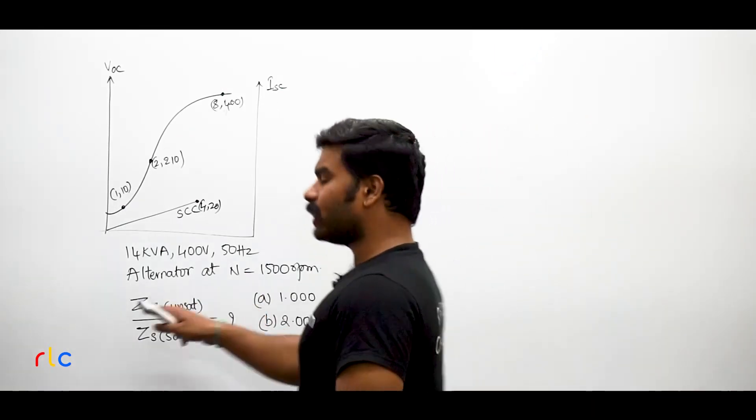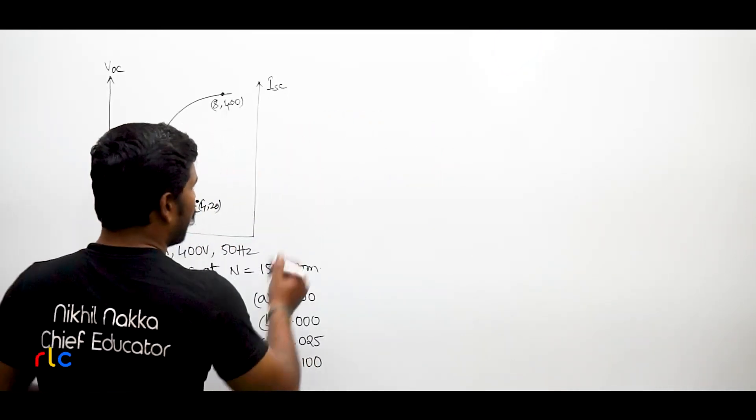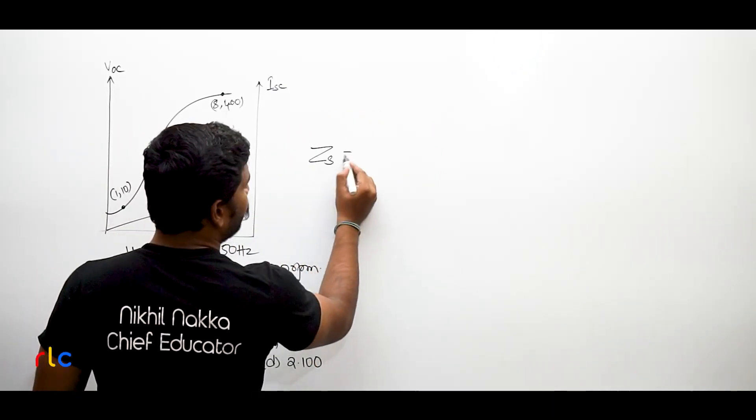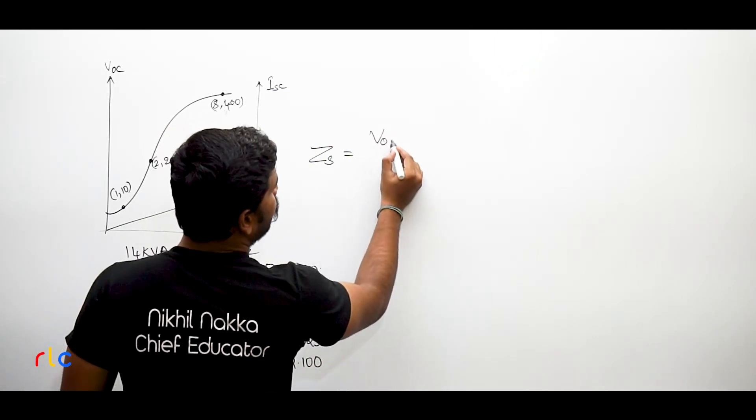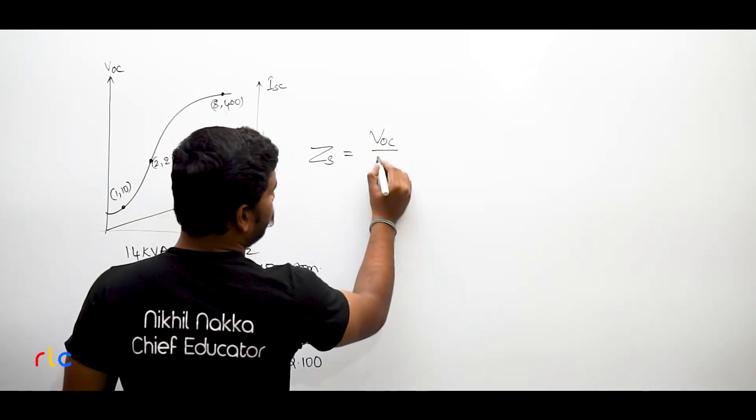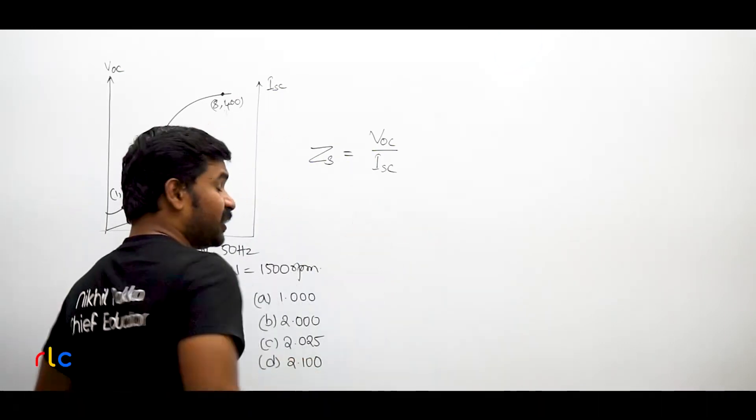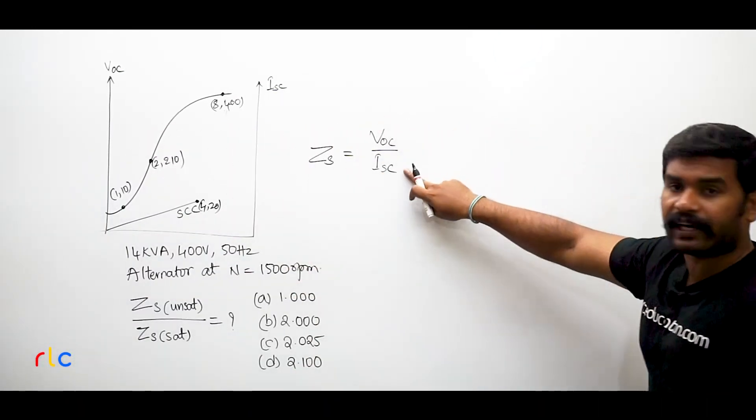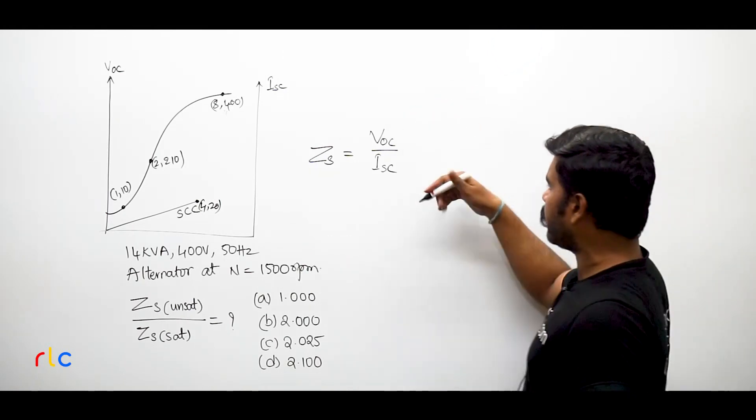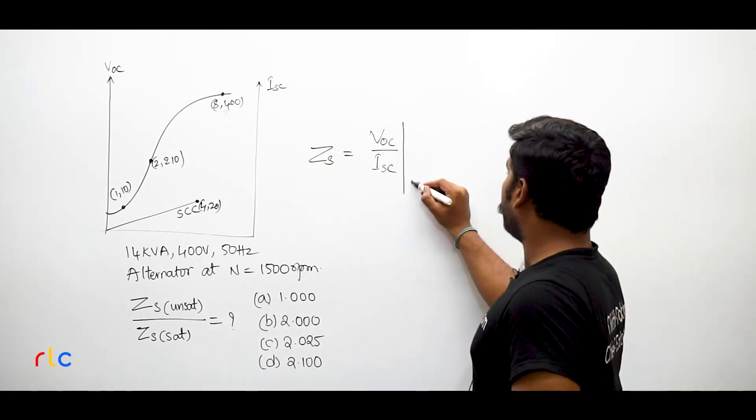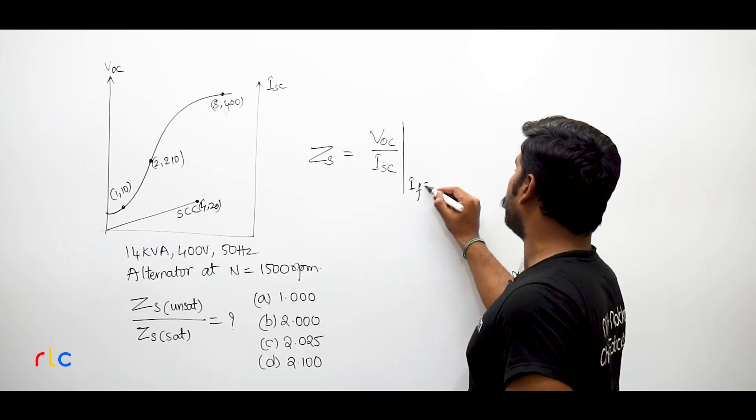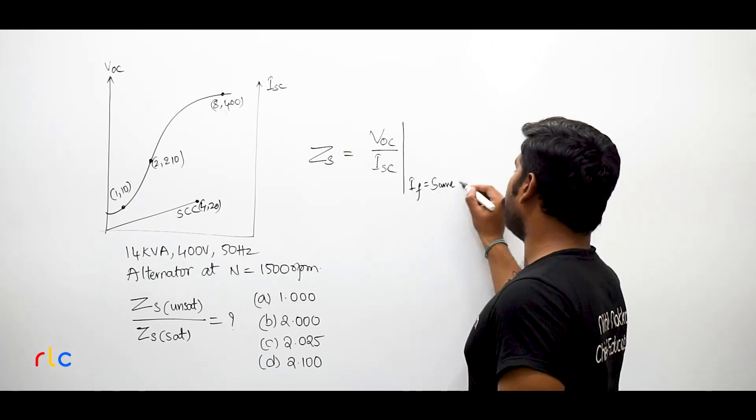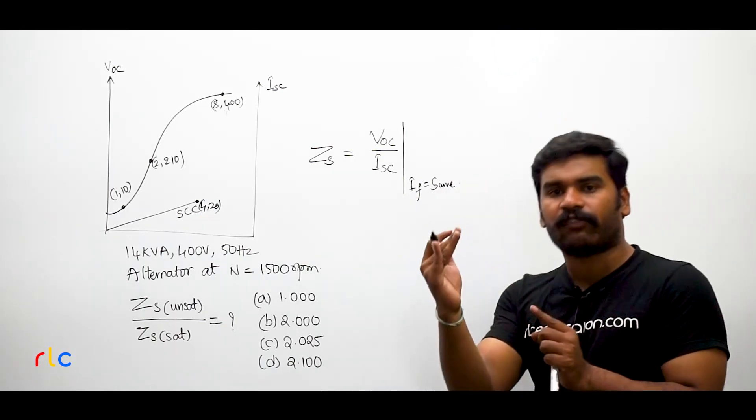See, Synchronous impedance ZS of any alternator will be calculated basically from these values. What you require is you require the open circuit voltage by short circuit current, and the condition is that this voltage and this current, short circuit and open circuit voltage, whatever are there, must be measured at field current same, same value of field current when same value of field current is there.